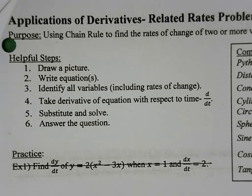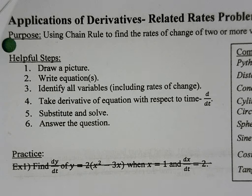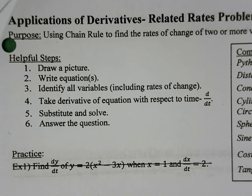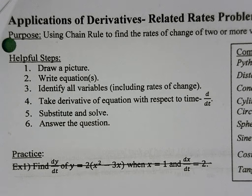Step one, we're going to draw a picture. Step two, we're going to write the equation or equations being used. Step three, we're going to identify all variables, including their corresponding rates of change. Then we're going to take the derivative of the equation with respect to time, substitute and solve, and answer the question.